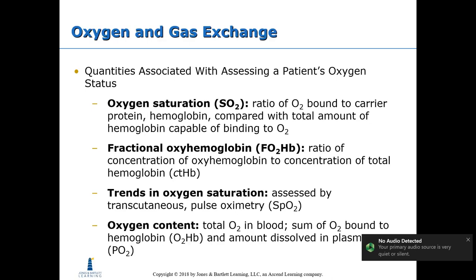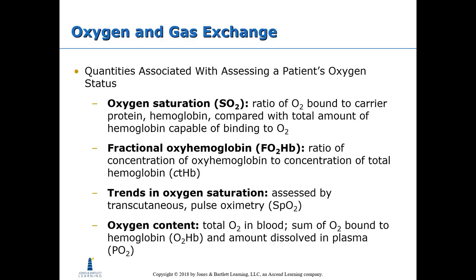Quantities associated with assessing a patient's oxygen status include: oxygen saturation (SO2), the ratio of oxygen bound to hemoglobin compared with the total amount of hemoglobin capable of binding oxygen; fractional oxyhemoglobin (fO2Hb), the ratio of oxyhemoglobin concentration to total hemoglobin concentration; trends in oxygen saturation assessed by transcutaneous pulse oximetry; and oxygen content, the total oxygen in the blood — the sum of oxygen bound to hemoglobin and the amount dissolved in plasma as pO2.